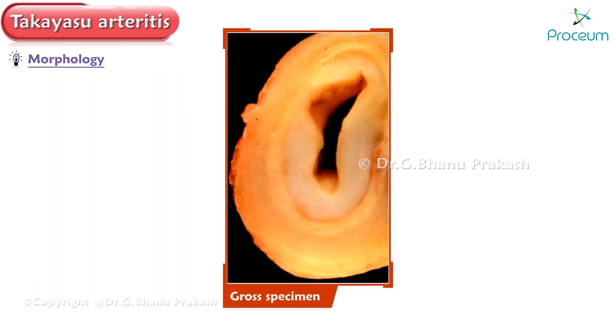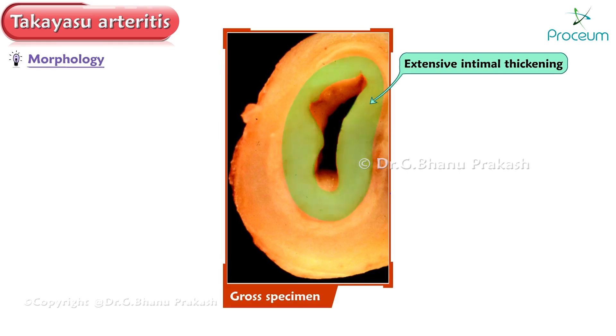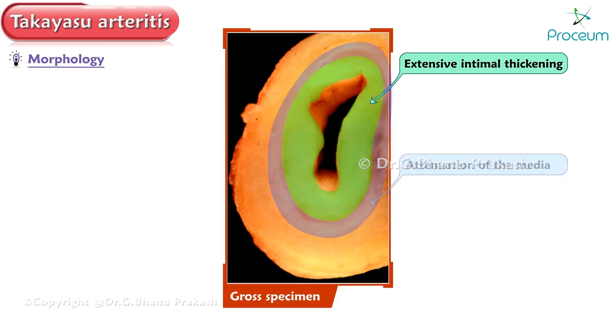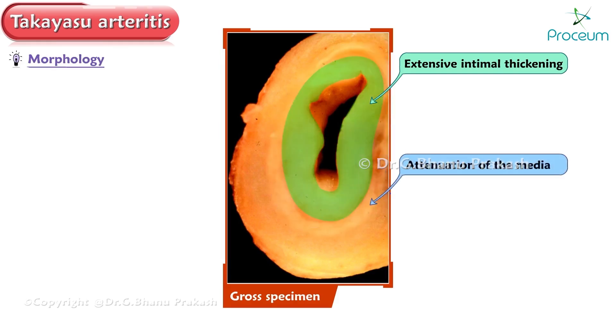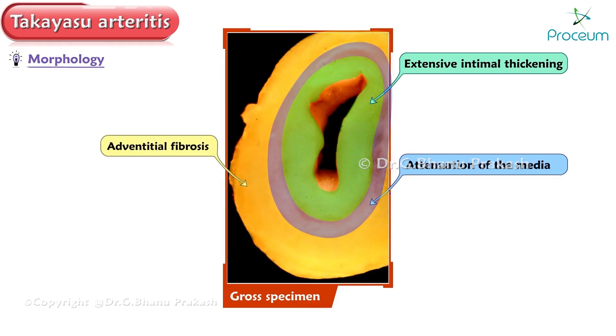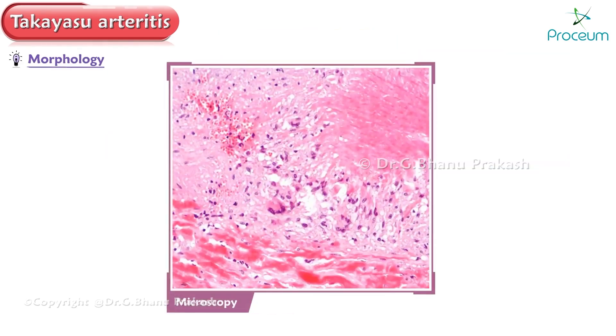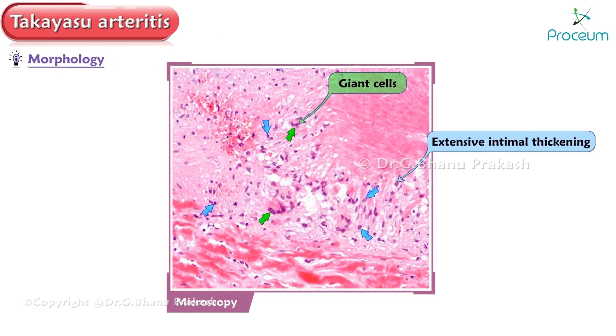Next, consider the morphology. The gross specimen shows extensive intimal thickening with attenuation of the media and adventitial fibrosis. Microscopy will show degeneration of the media with a dense inflammatory infiltrate, including giant cells.